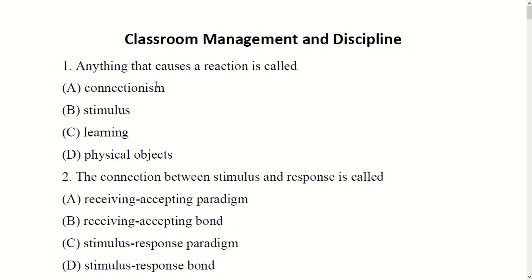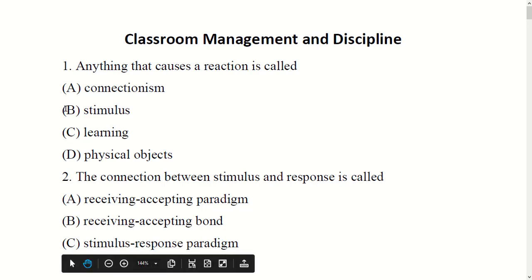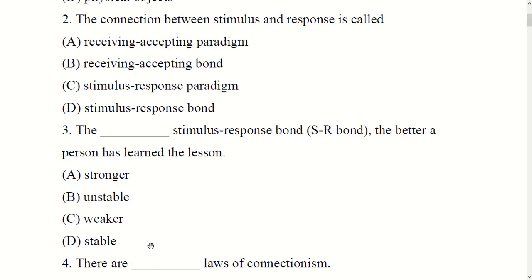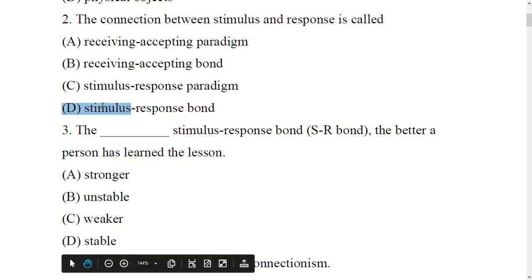Anything that causes a reaction is called a stimulus. You have four options: Connectionism, Stimulus, Learning, or Physical Objects. The right answer is Stimulus. Second, the connection between Stimulus and Response is called — you have four options: Receiving Paradigm, Accepting Paradigm, Stimulus-Response Paradigm, or Stimulus-Response Bond. The right answer is D: Stimulus-Response Bond.